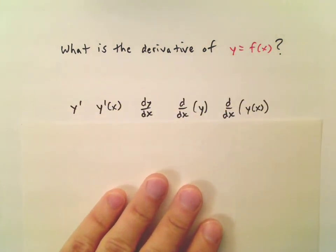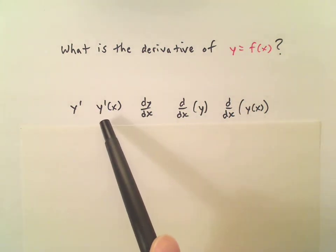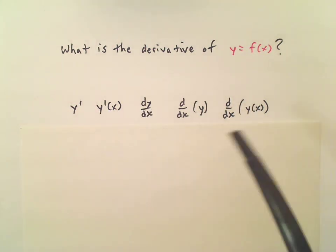Here are some of them: y prime, y prime x, dy over dx, etc. All these expressions stand for the same thing, they're simply different ways of writing out the derivative of y equals f of x.